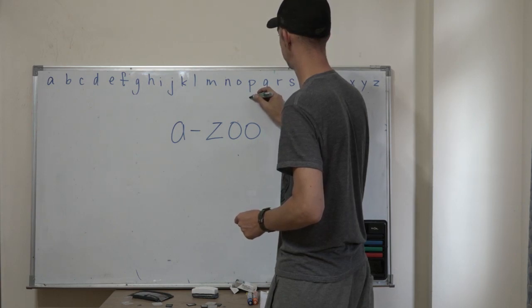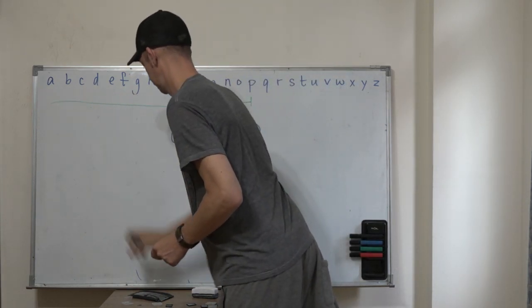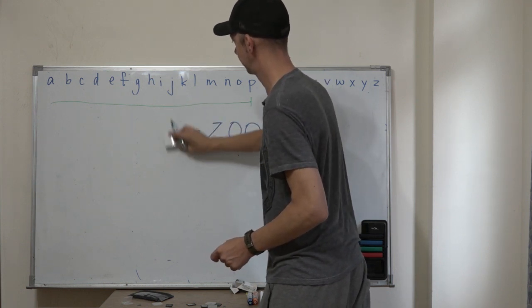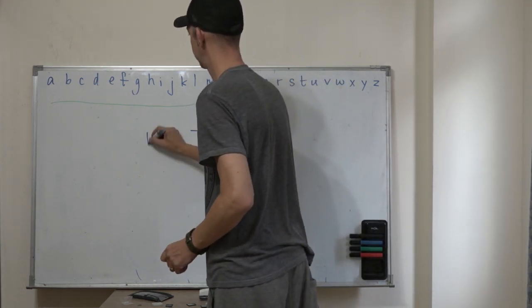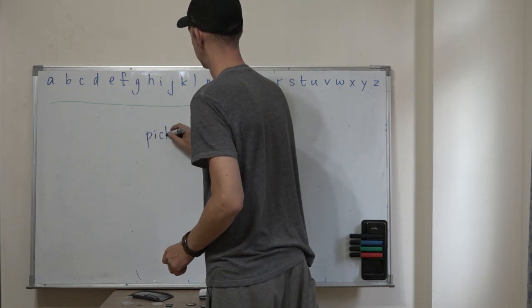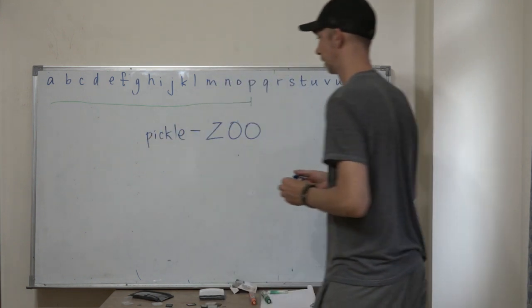I don't want to erase the letters, but I do want to show him where it is. So it is here. And I need to erase this and show that the new range is between pickle and zoo.